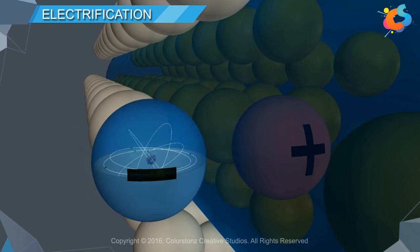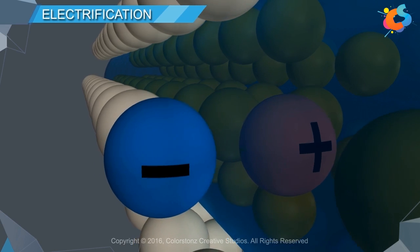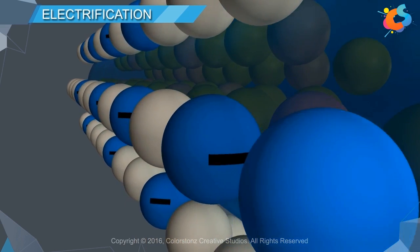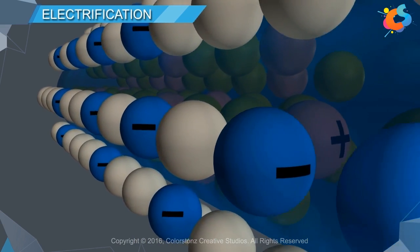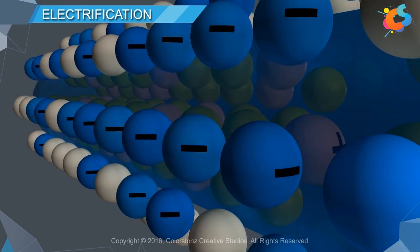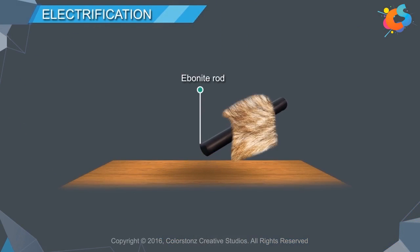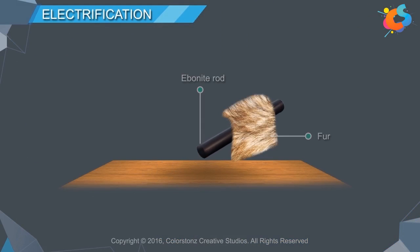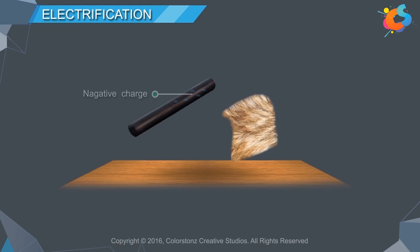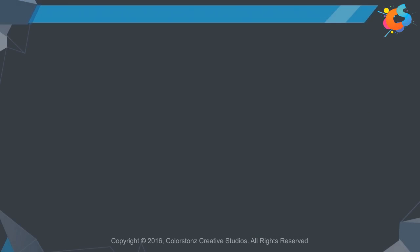These electrons are gained by the silk cloth. Due to the excess of electrons in the atoms of the silk cloth, the silk cloth develops negative charge. Similarly, when an ebonite rod is rubbed against fur, the ebonite rod acquires a negative charge while the fur acquires a positive charge.